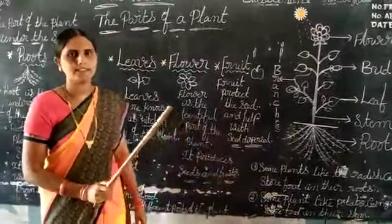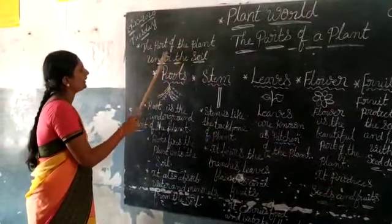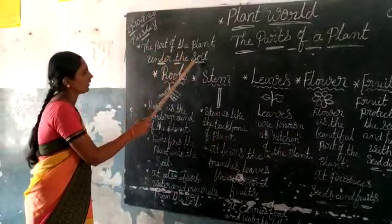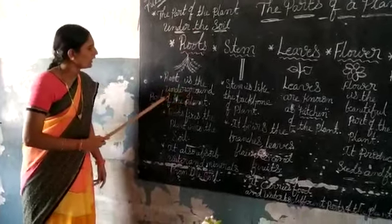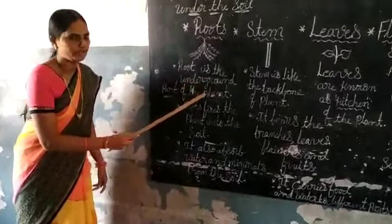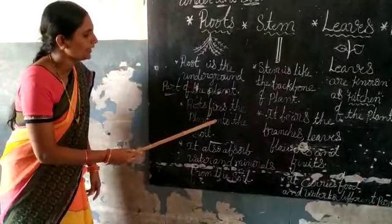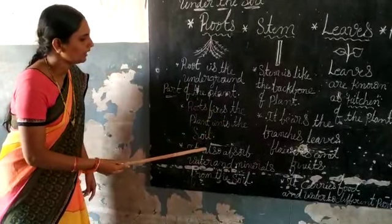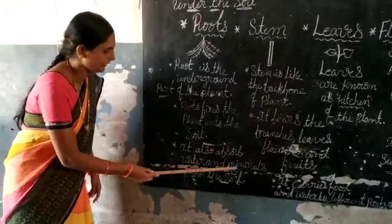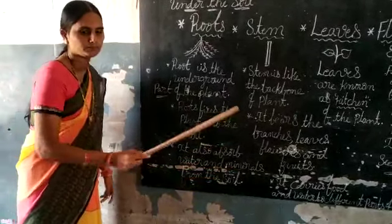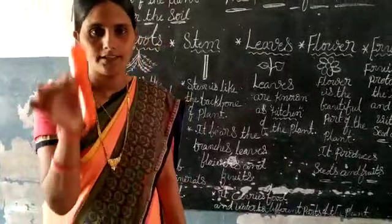Now let's discuss about roots. The part of the plant under the soil — root is the underground part of the plant. Roots fix the plant into the soil. Roots also absorb water and minerals from the soil.